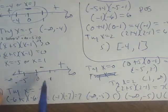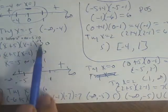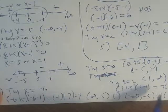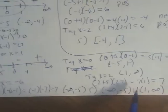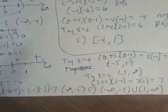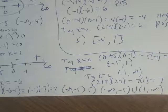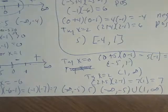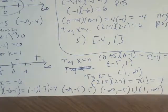Had this been greater than or equal to, these endpoints would be bracketed. So that is it — you are now ready to solve a polynomial inequality.